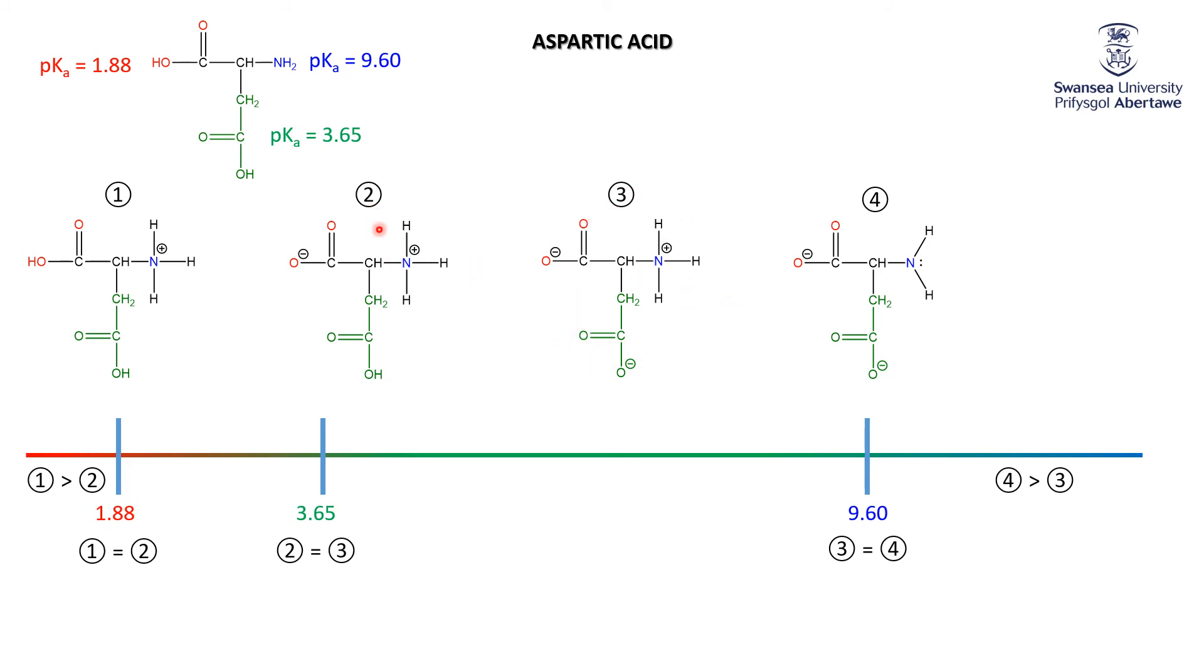Structure number two is actually the zwitterion. In structure two, the green acid hasn't really gotten involved as an acid at all. The original red acid is in its conjugate base form, and the amine is in its conjugate acid form. So two is the zwitterion.